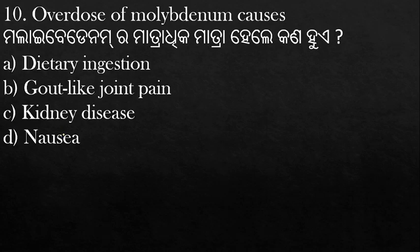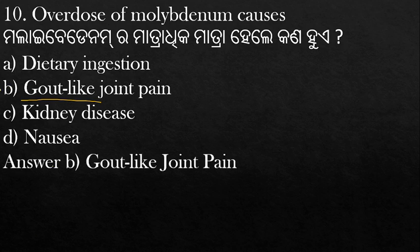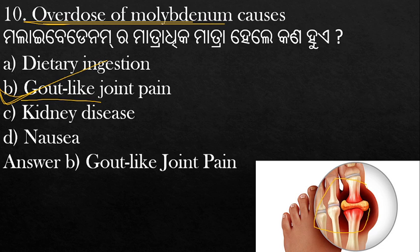Overdose of molybdenum causes which condition? Molybdenum overdose leads to gout-like joint pain, kidney disease, and nausea. The answer is gout-like joint pain. Excess molybdenum causes joint pain similar to gout, particularly affecting the toe joint.